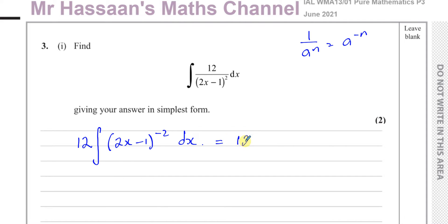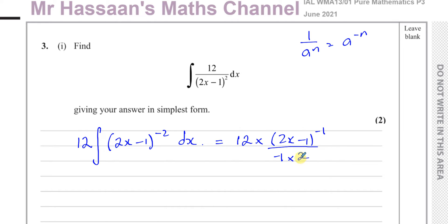So to integrate this, we have 12 outside, then we add 1 to the power: (2x minus 1) to the power of negative 2 becomes (2x minus 1) to the power of negative 1. We divide by the new power, which is minus 1, and also by the differential of what's inside, which is 2. The 2 cancels with the 12 to give 6, and don't forget your plus c since it's an indefinite integral — so we get minus 6 times (2x minus 1) to the power of minus 1 plus c.